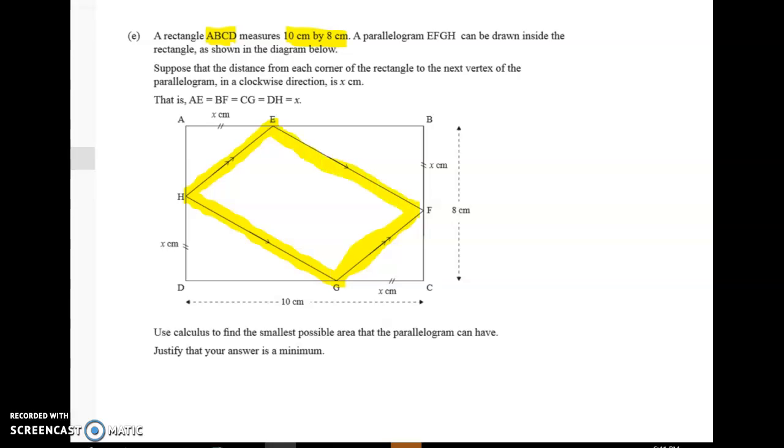All right so let's just skim read what we've got to do. This next bit is the confusing bit and if you look at the diagram it's totally fine but the words don't really help. So the parallelogram is inside the rectangle. Suppose that the distance from each corner of the rectangle to the next vertex of the parallelogram in a clockwise direction is x centimeters. Well I'm really pleased they gave us a diagram because I think that would be quite tricky to draw from the words but if you look on the diagram it's not so bad.